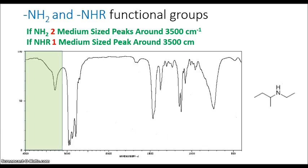When it's a secondary amine, what we'll observe is only one peak. So since this molecule only has one N-H bond, we're going to expect to see only one peak around 3500 cm⁻¹.